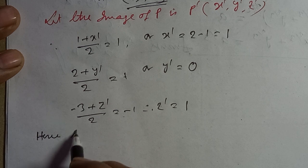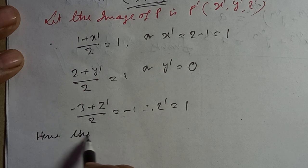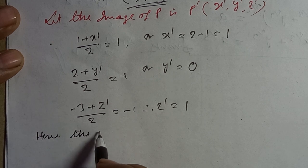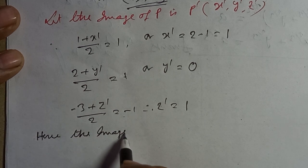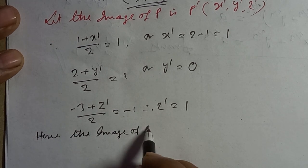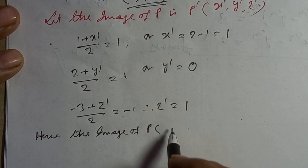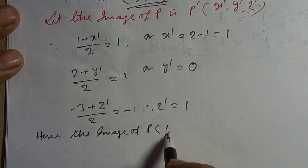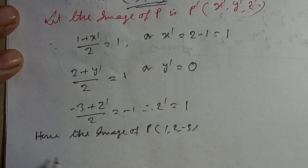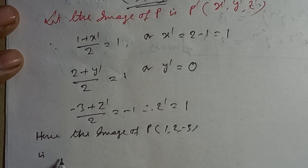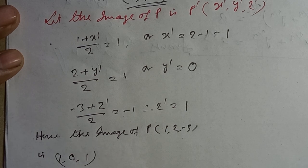Hence, the image of P(1, 2, -3) is P'(1, 0, 1).